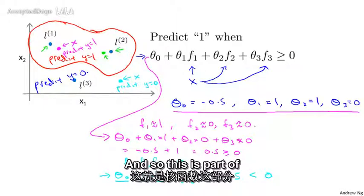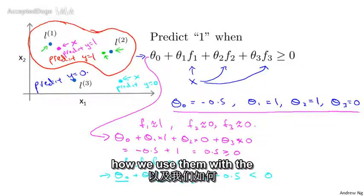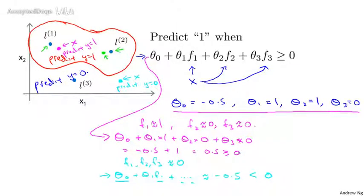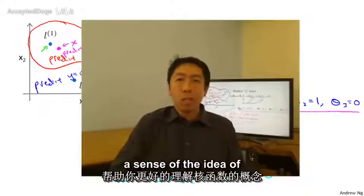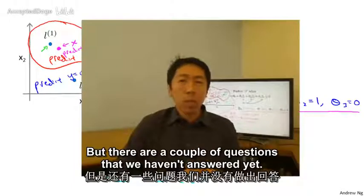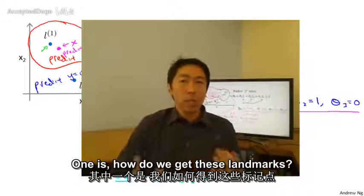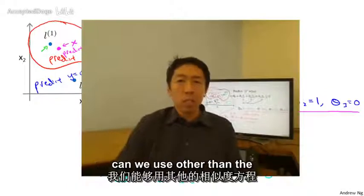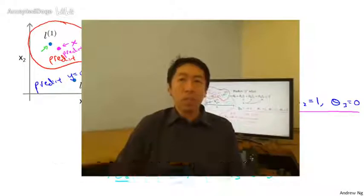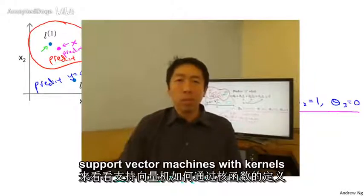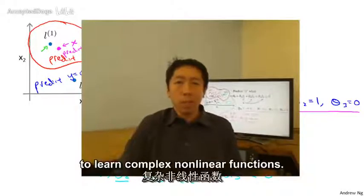This is part of the idea of kernels and how we use them with a support vector machine — we define extra features using landmarks and similarity functions to learn more complex nonlinear classifiers. But there are a couple of questions we haven't answered yet. How do we get these landmarks? How do we choose them? And what other similarity functions can we use other than the Gaussian kernel? In the next video, we'll give answers to these questions and put everything together to show how support vector machines with kernels can be a powerful way to learn complex nonlinear functions.